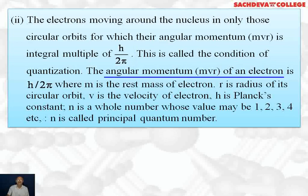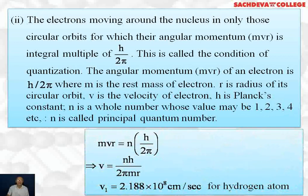The angular momentum MVR of an electron is h/2π where m is rest mass of the electron, r is radius of its circular orbit, v is velocity of electron, h is Planck's constant, n is a whole number whose value can be 1, 2, 3, 4, etc. n is also called principal quantum number. So MVR equals nh/2π. This is shown here MVR equals nh/2π. Now velocity will equal nh/(2πmr). Substituting the value, v₁ comes out to be 2.188×10⁸ cm/s for hydrogen atom in the first energy level.